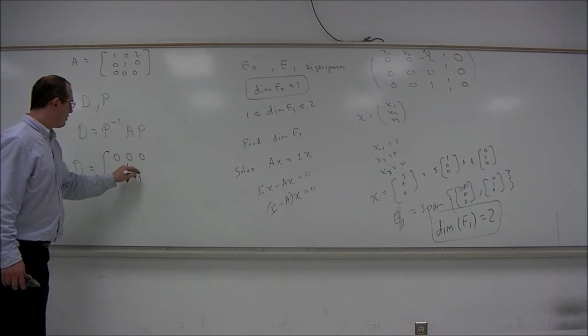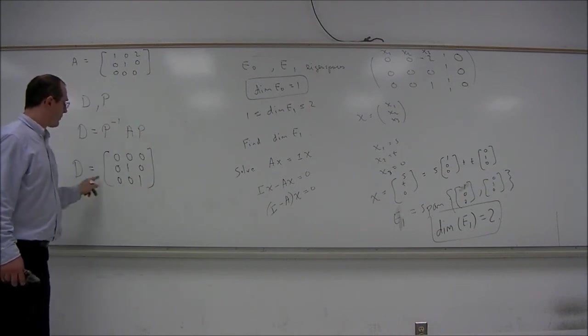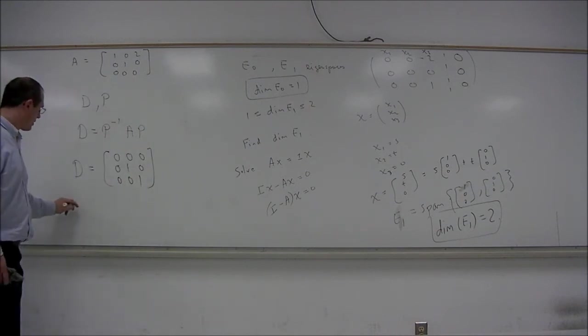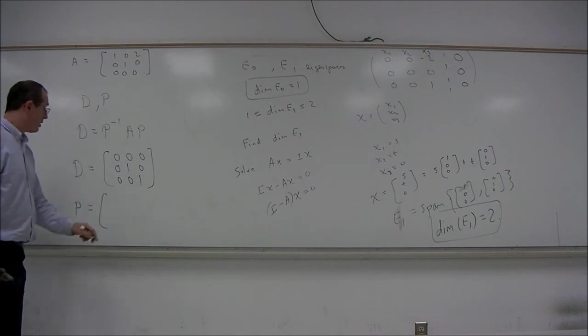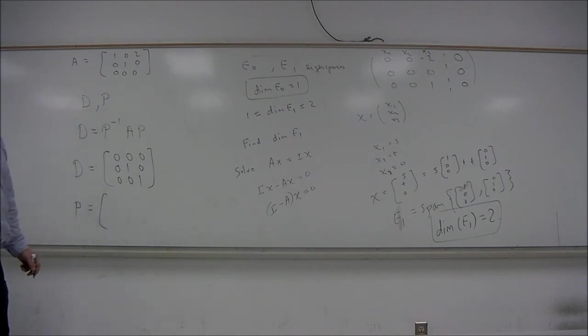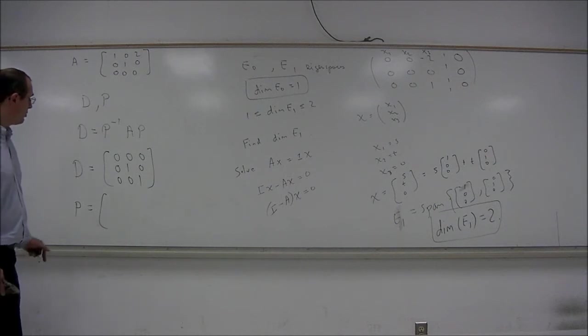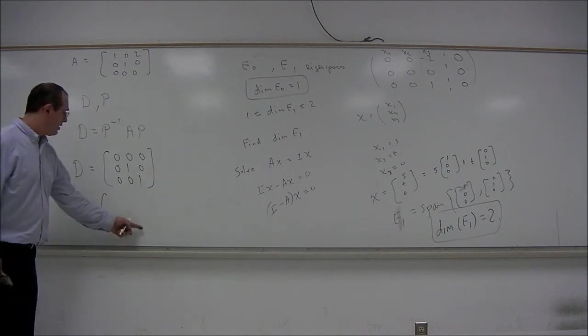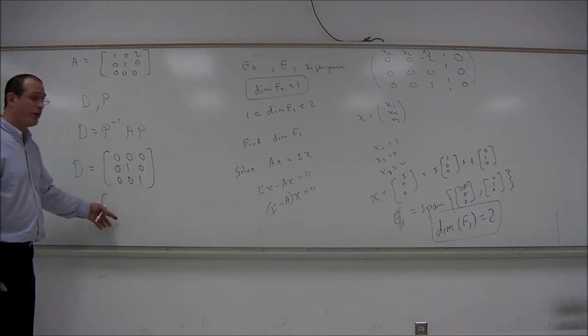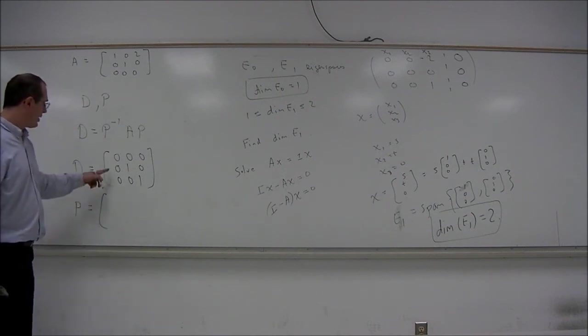So there are the eigenvalues. And it's a diagonal matrix, so the other entries are all 0's. So there's our D. And for P, we need the eigenvectors associated with the corresponding eigenvalues in the corresponding columns.